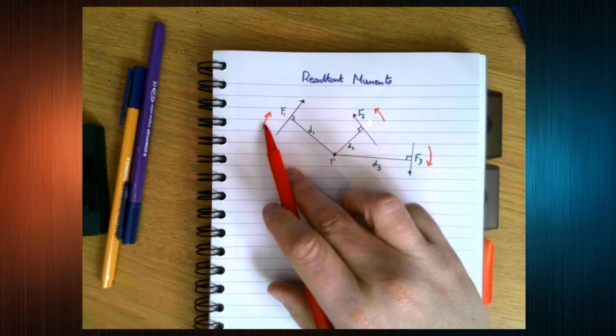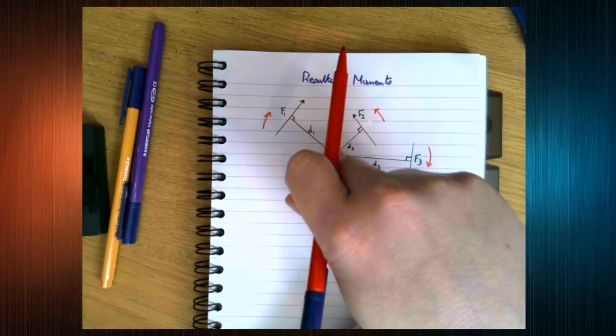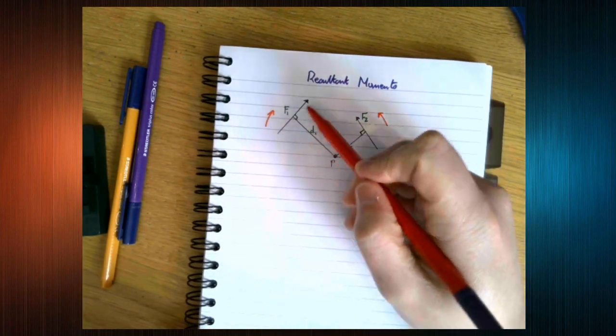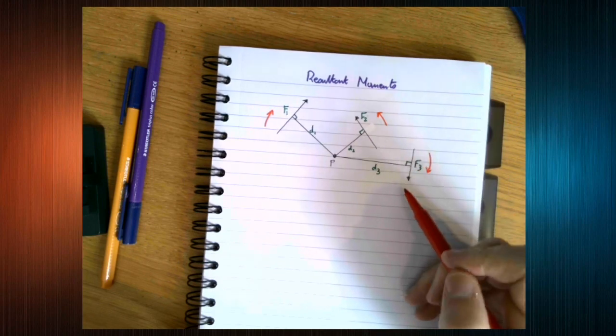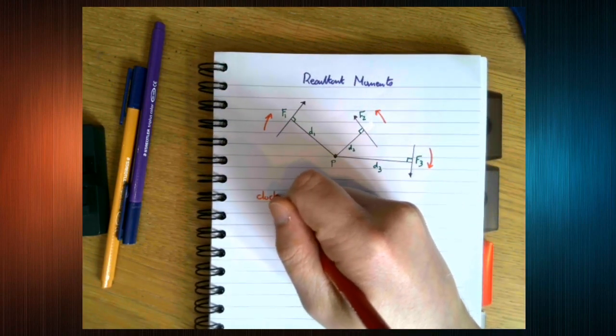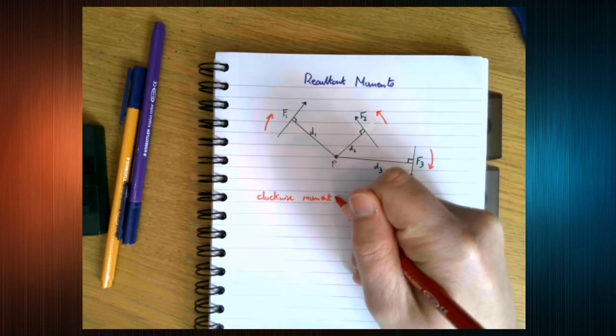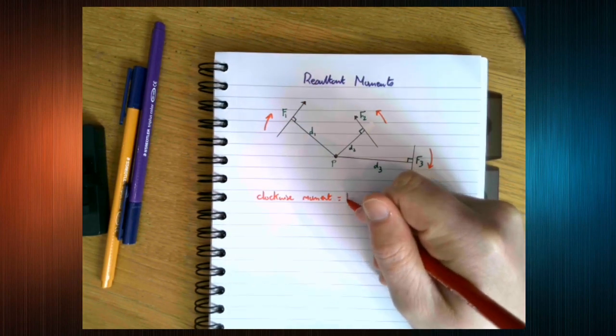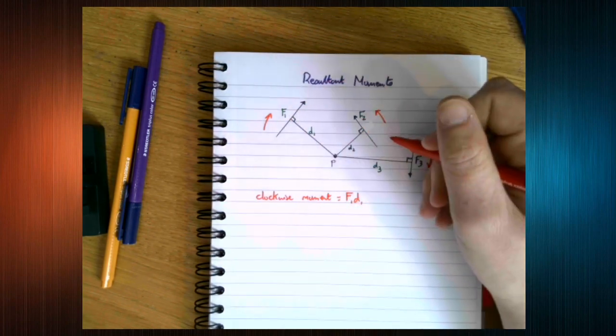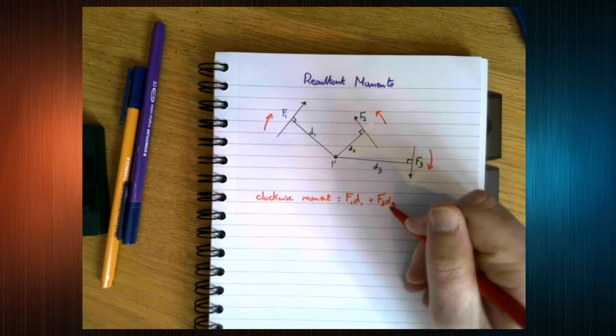So we've got two forces that are going to make the lamina turn clockwise. We've got this F1 and F3. So the total clockwise moment is going to be F1 D1 plus F3 D3.